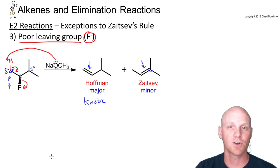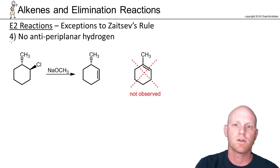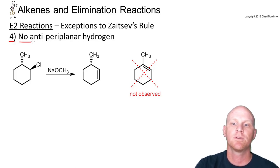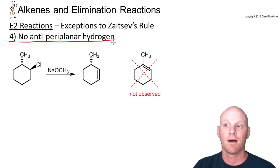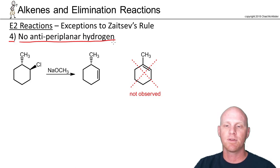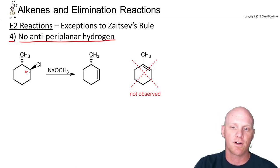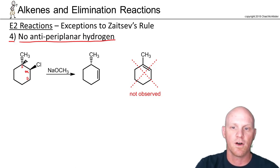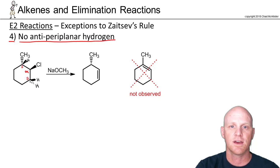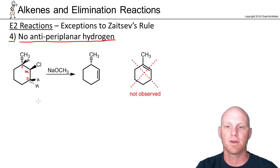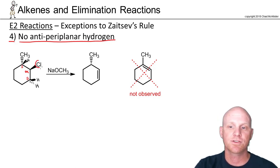The fourth exception to Zaitsev's rule: if you don't have an anti-periplanar hydrogen on your beta carbon, you can't form an alkene there. This shows up most commonly on cyclohexane. Our alpha carbon has two beta carbons, each with hydrogens. On a cyclohexane ring, anti-periplanar means the hydrogen taken from the beta carbon must be trans to the leaving group. Here the leaving group is on a wedge, so the hydrogen we take must be on a dash — the trans position. The two wedge hydrogens will not work.